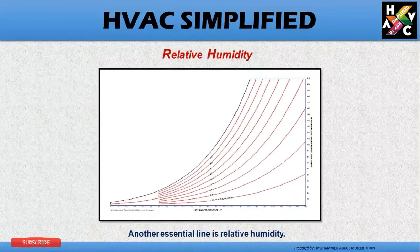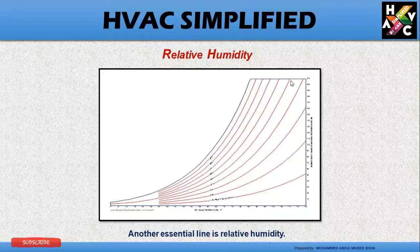Another essential line is relative humidity, which is an arc line represented on the psychrometric chart. Here you can find the relative humidity in percentages.